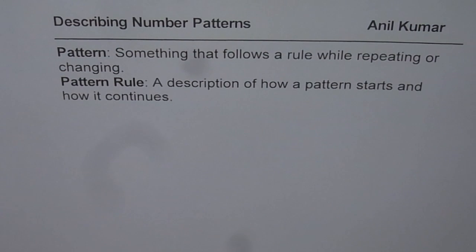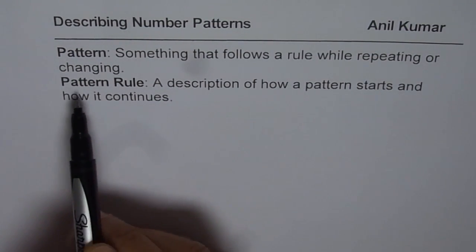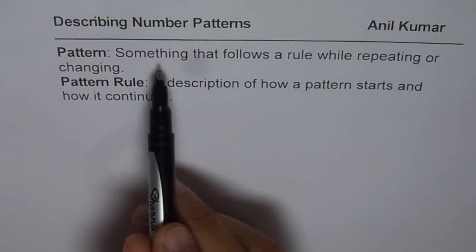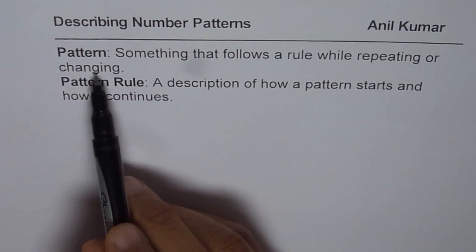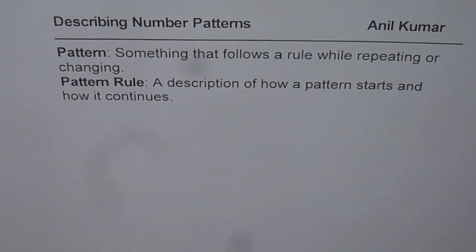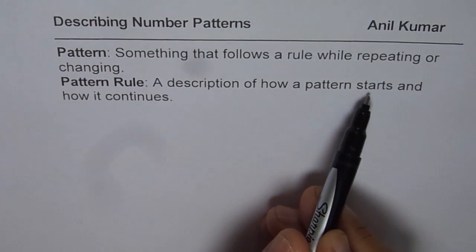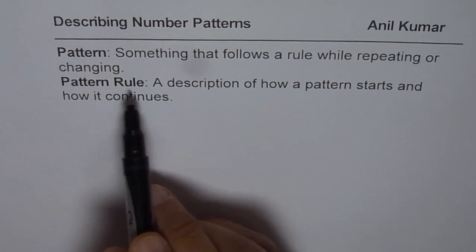When we describe number patterns, we may use two terms. One of them is pattern itself. The other one is pattern rule. So what is a pattern? Something that follows a rule while repeating or changing is called a pattern. And what is a pattern rule? A description of how a pattern starts and how it continues describes the pattern, and so we call that a pattern rule.